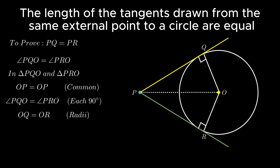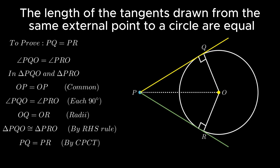Therefore by RHS congruency, triangle PQO is congruent to triangle PRO. Therefore by corresponding parts of congruent triangles, segment PQ equals segment PR. Hence the theorem is proved.